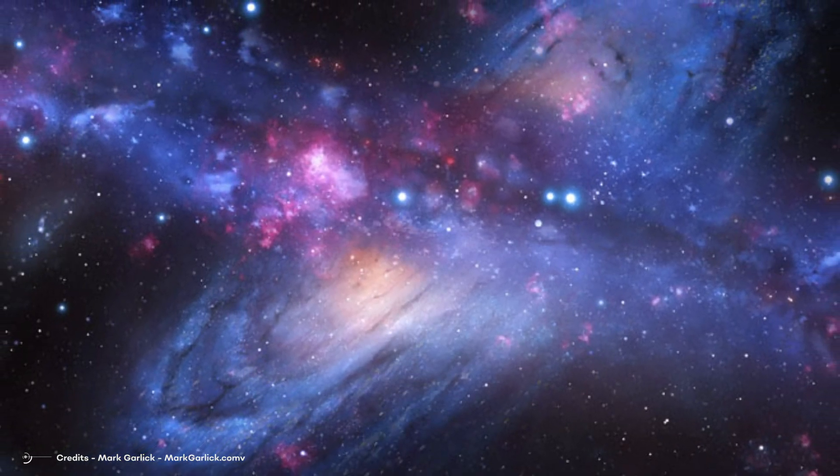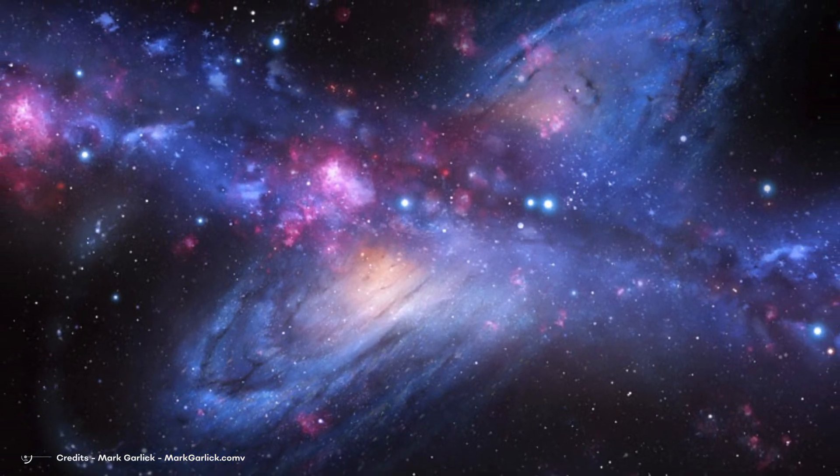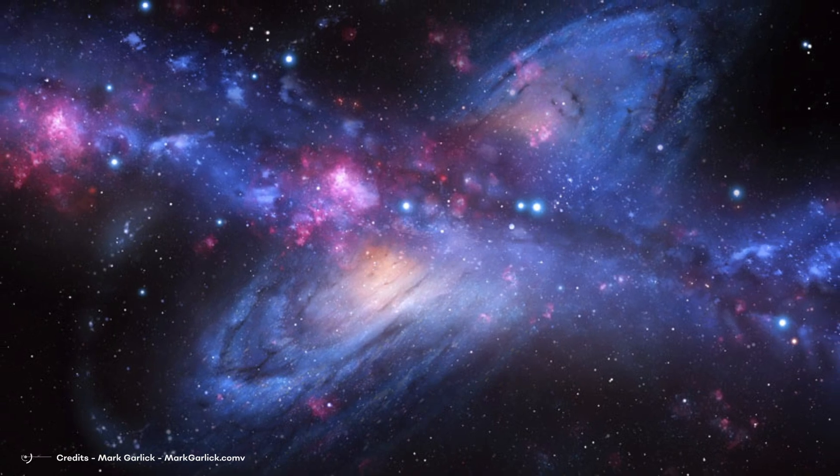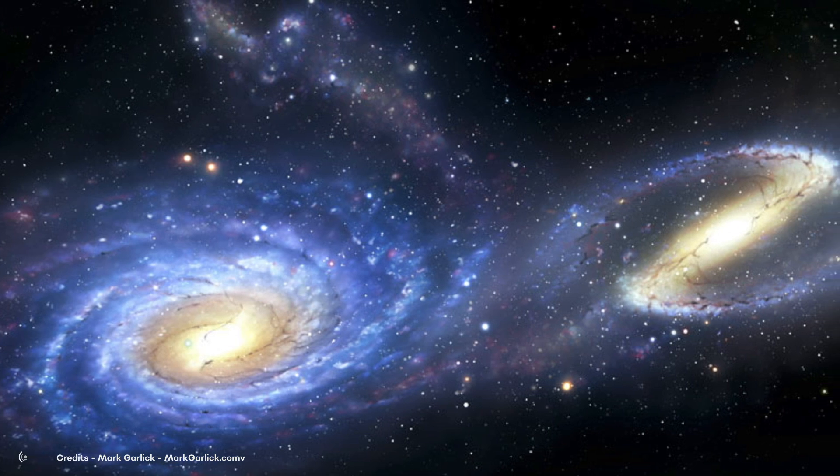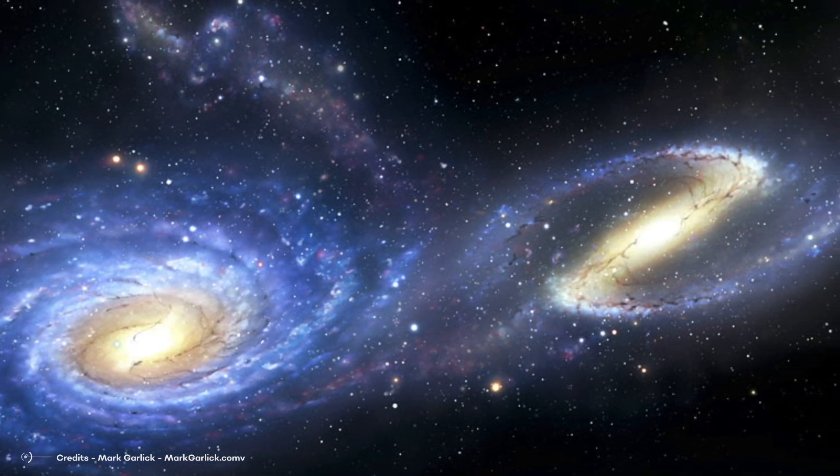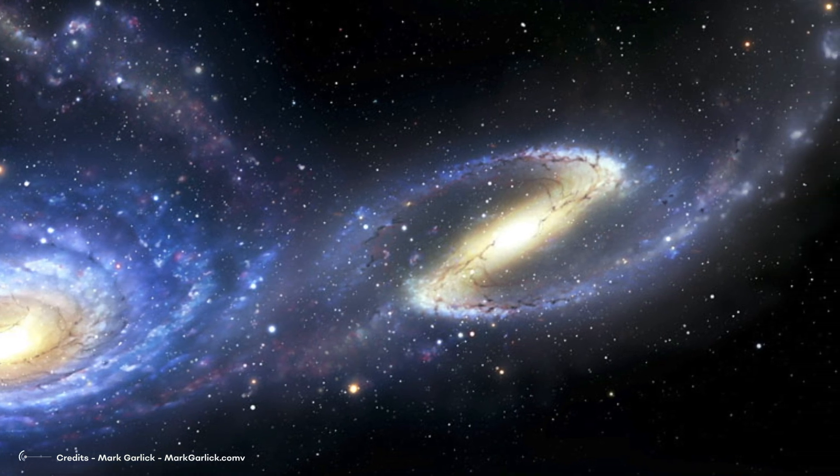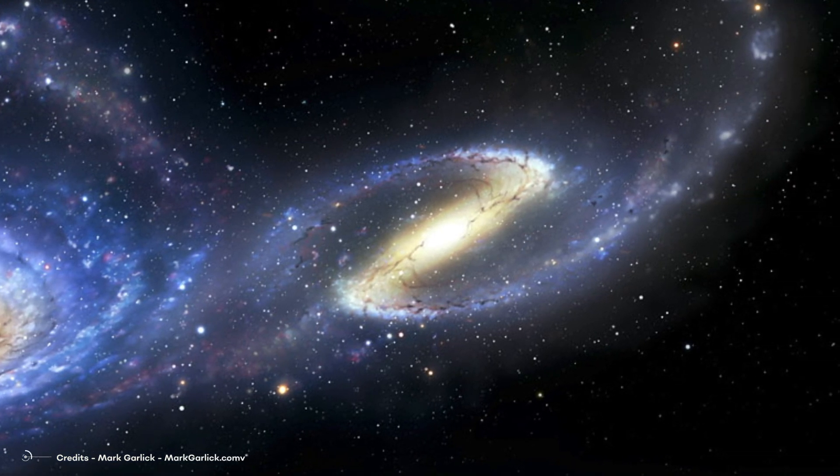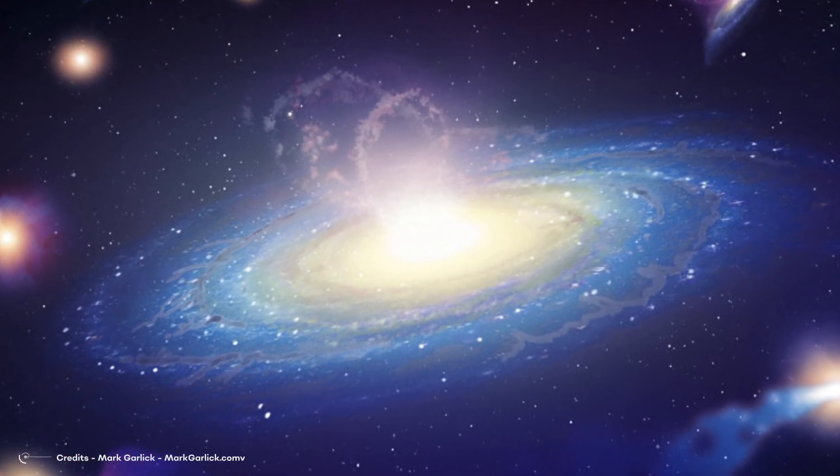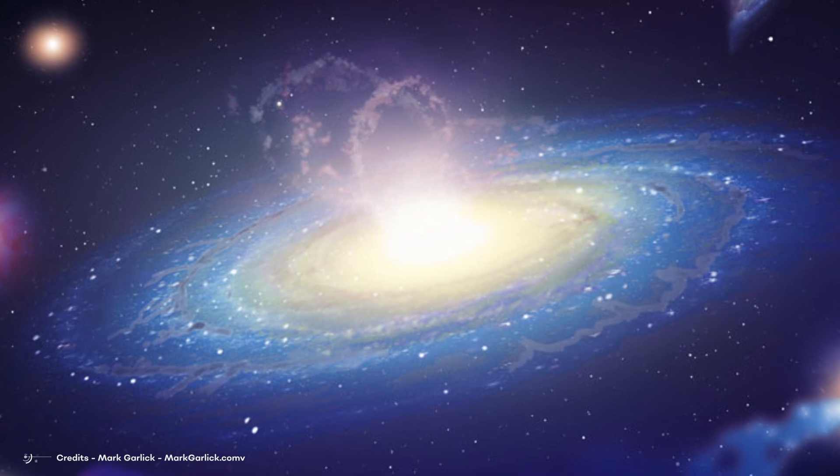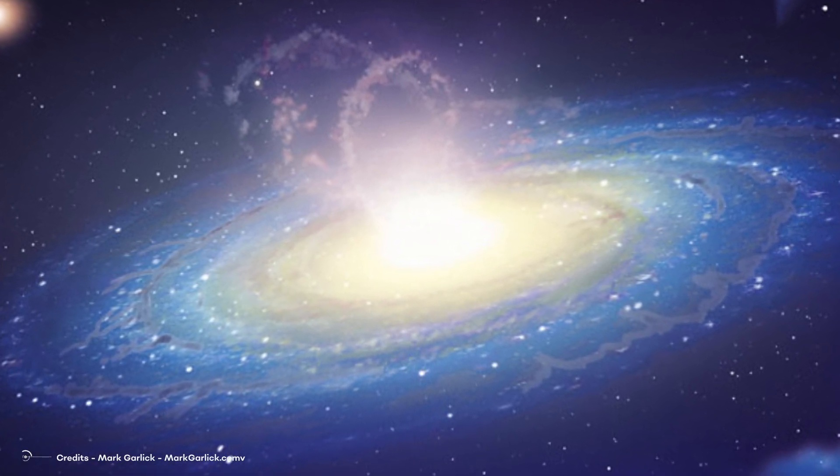However, over time they merged with other galaxies and grew bigger, eventually becoming the massive galaxies we see today, or at least we thought. Sometimes galaxies bump into each other and merge, like two families coming together to form a bigger one. These collisions can be violent and chaotic, with stars and gas swirling around in all directions. Scientists used to think that these galactic collisions were the main way that galaxies grew and evolved over time. They believed that the more collisions a galaxy had, the bigger and more complex it would become.